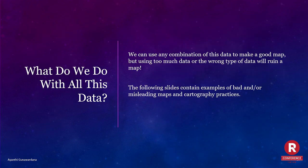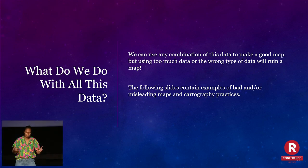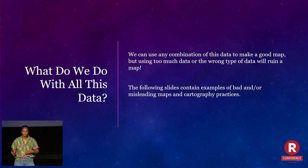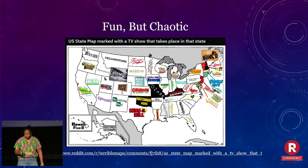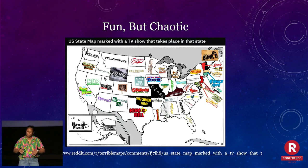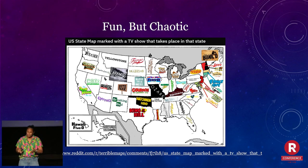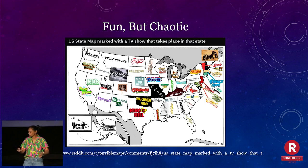Now we have all this data and information — so what do we do with it? We can use any combination of this data to make a good map, but using too much data or the wrong type of data will ruin a map. The following slides contain examples of bad or misleading maps. This one is a nightmare — every state has a different logo that fills up the entire state, everything on the East Coast is in the Atlantic Ocean. Please don't make a map like this; it's good for a BuzzFeed article, but nothing else.